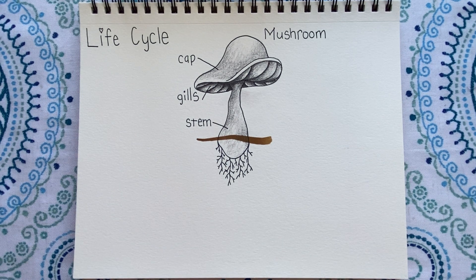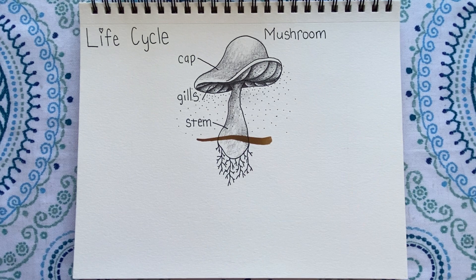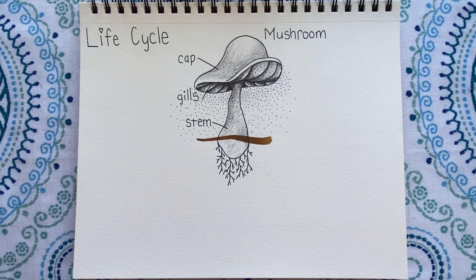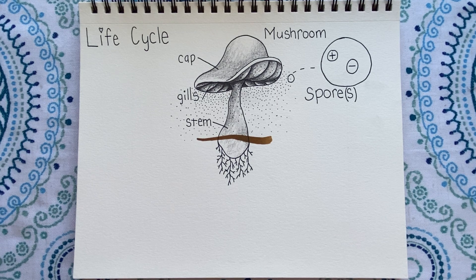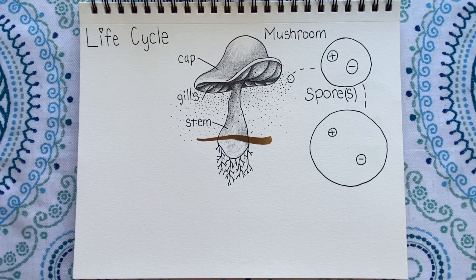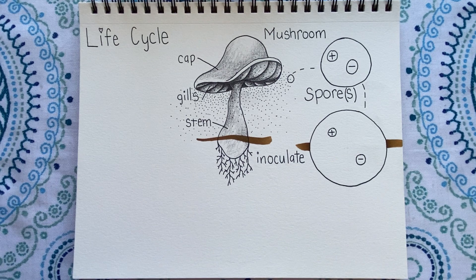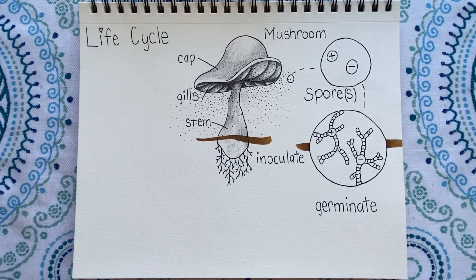Mushrooms produce and release spores from their gills. Each mushroom is capable of producing hundreds of thousands of spores. These are spores. Spores can be either male or female. If a spore lands where there is moisture and food, they begin to inoculate and the spores germinate one cell at a time.